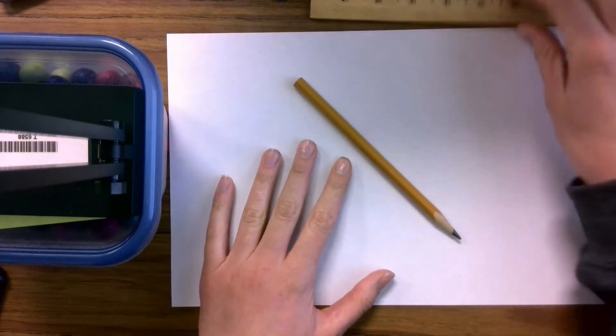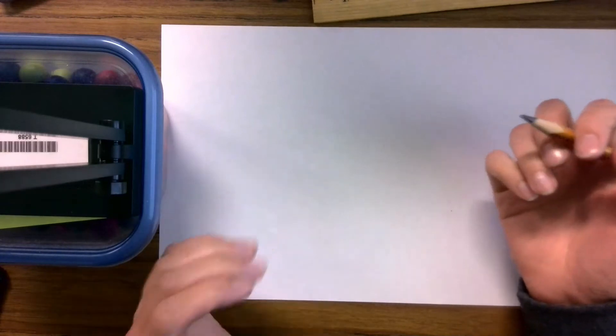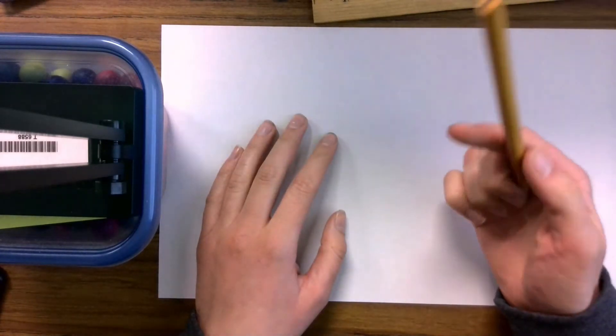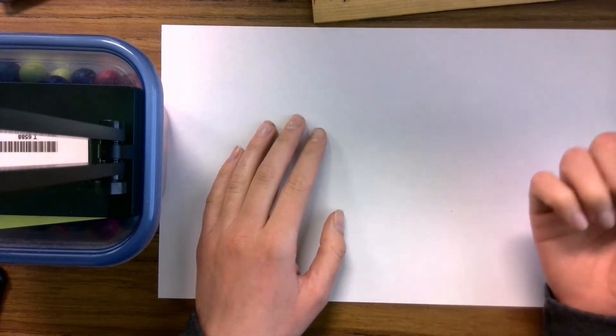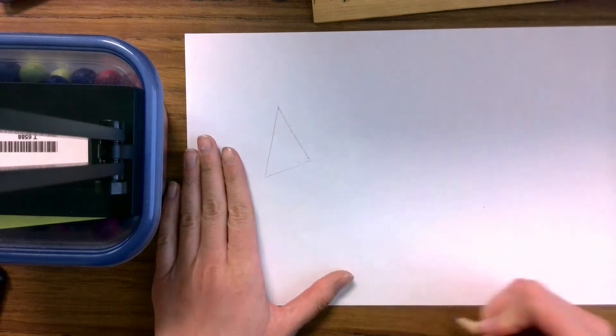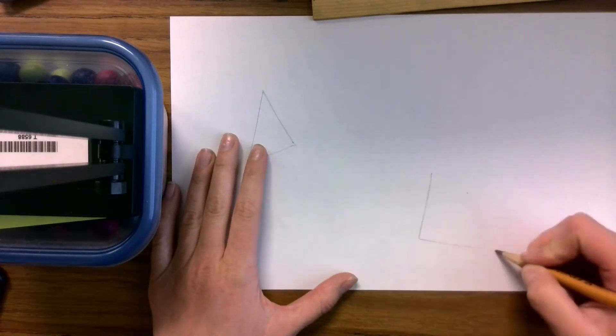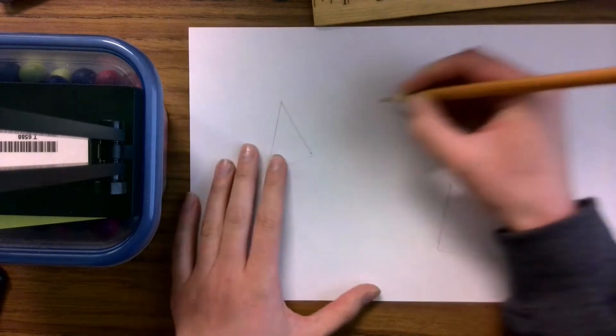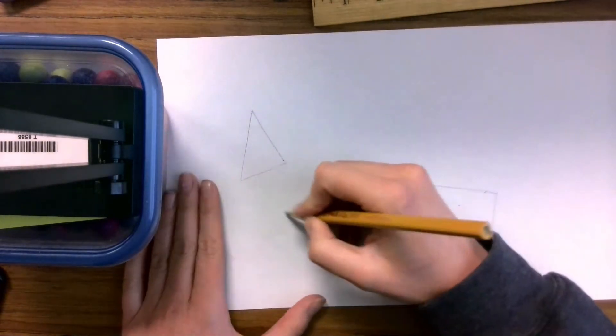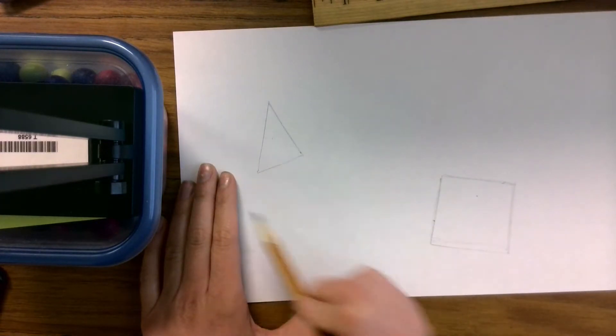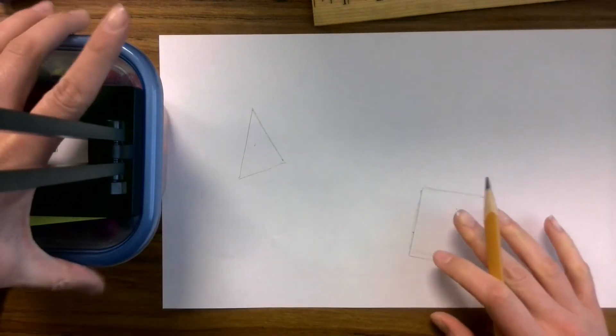So what you're going to do first is you're going to just draw some polygons, and a polygon is a shape that has three or more angles and sides. So for example, a triangle is a polygon. A square is a polygon. You could even make up your own type of polygon as long as it has three or more corners and sides. It's a polygon.